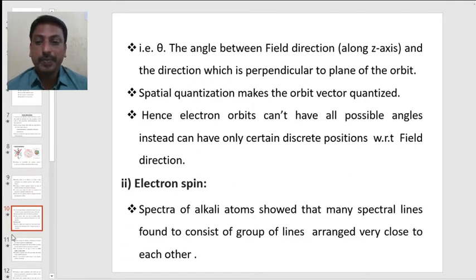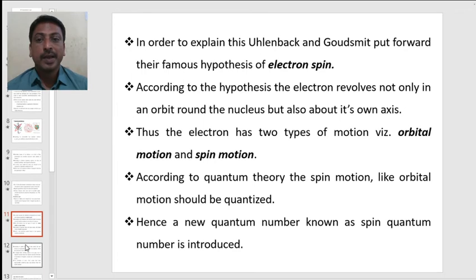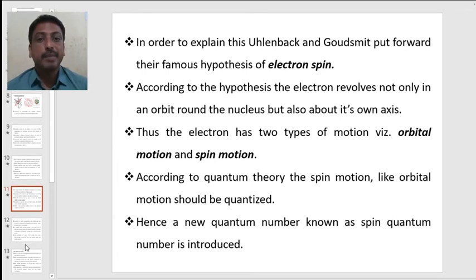Second one is electron spin. Spectra of alkali atoms showed that many spectral lines consist of groups of lines arranged very close to each other. In order to explain this, Uhlenbeck and Goudsmit put forward their famous hypothesis known as electron spin. According to the hypothesis, the electron revolves not only in an orbit around the nucleus but also about its own axis. Thus, the electron has two types of motion: orbital motion as well as spin motion.